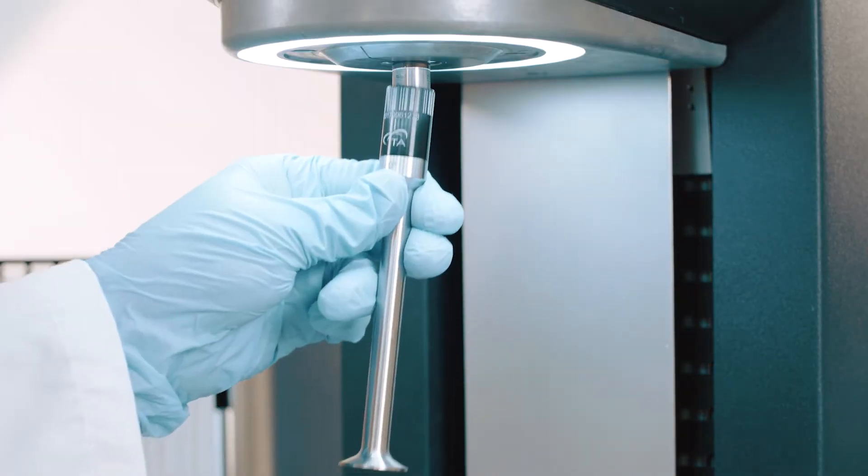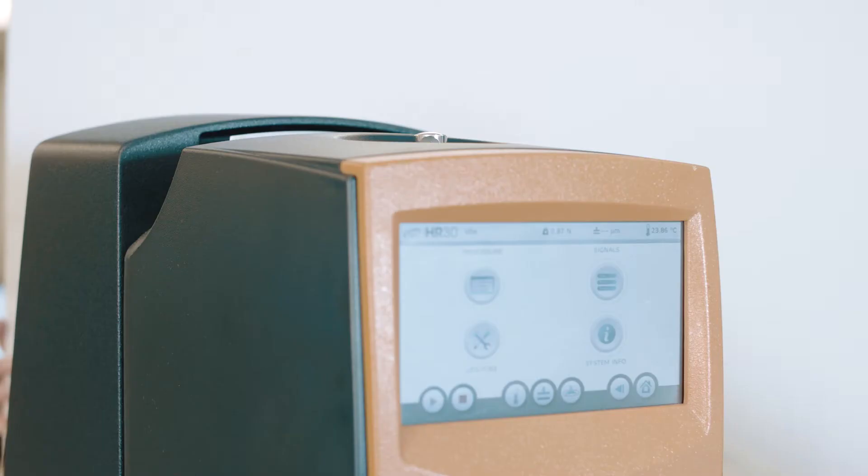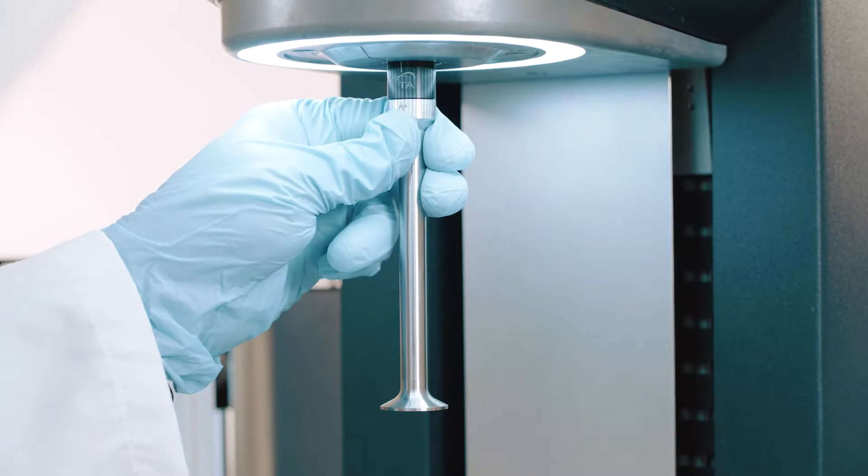With the rheometer head raised, load the 25 millimeter geometry by pushing it up the spindle and screwing the jaw rod finger tight.